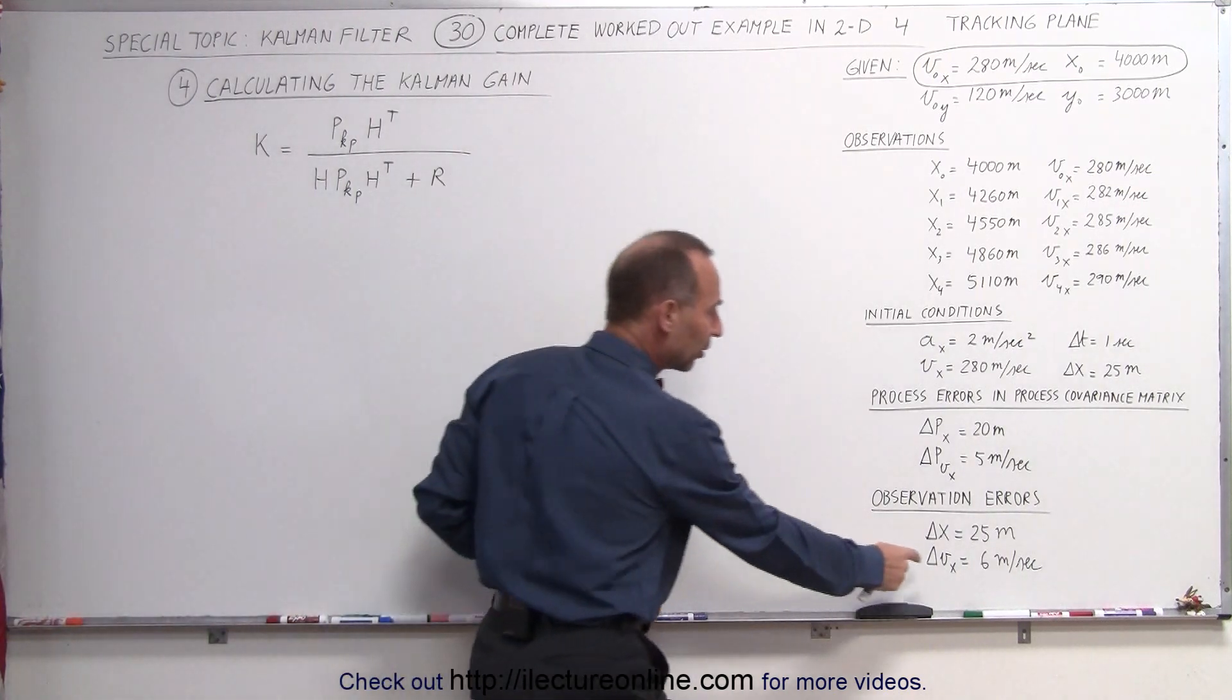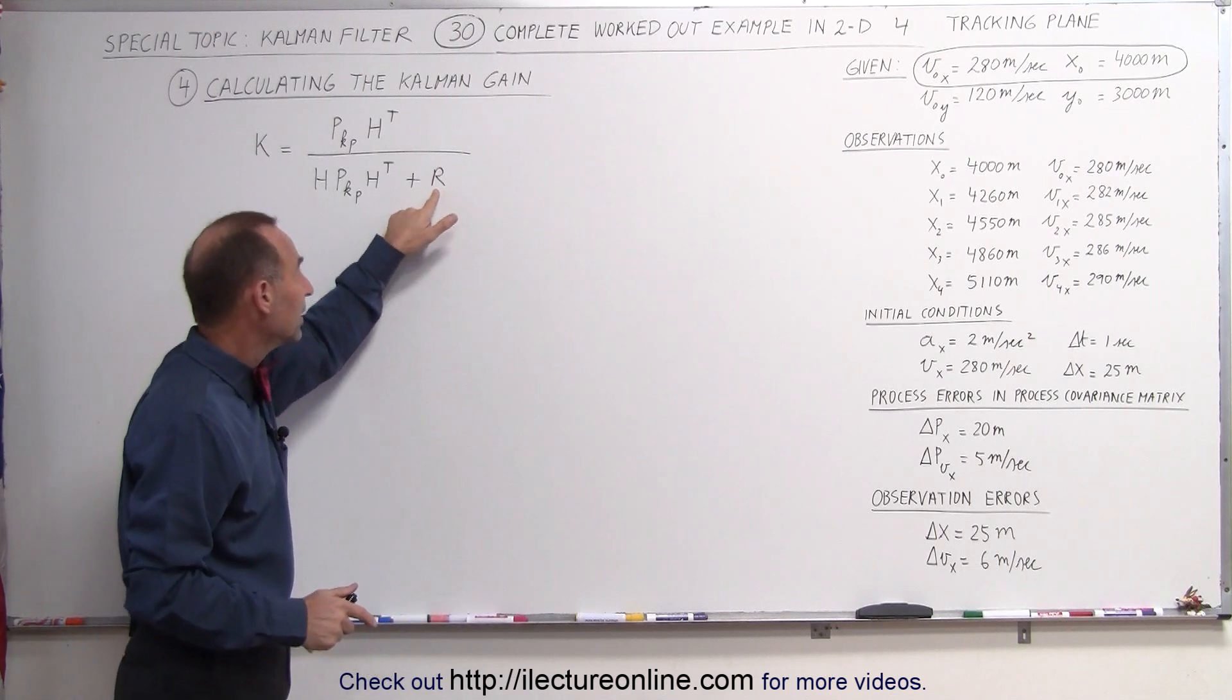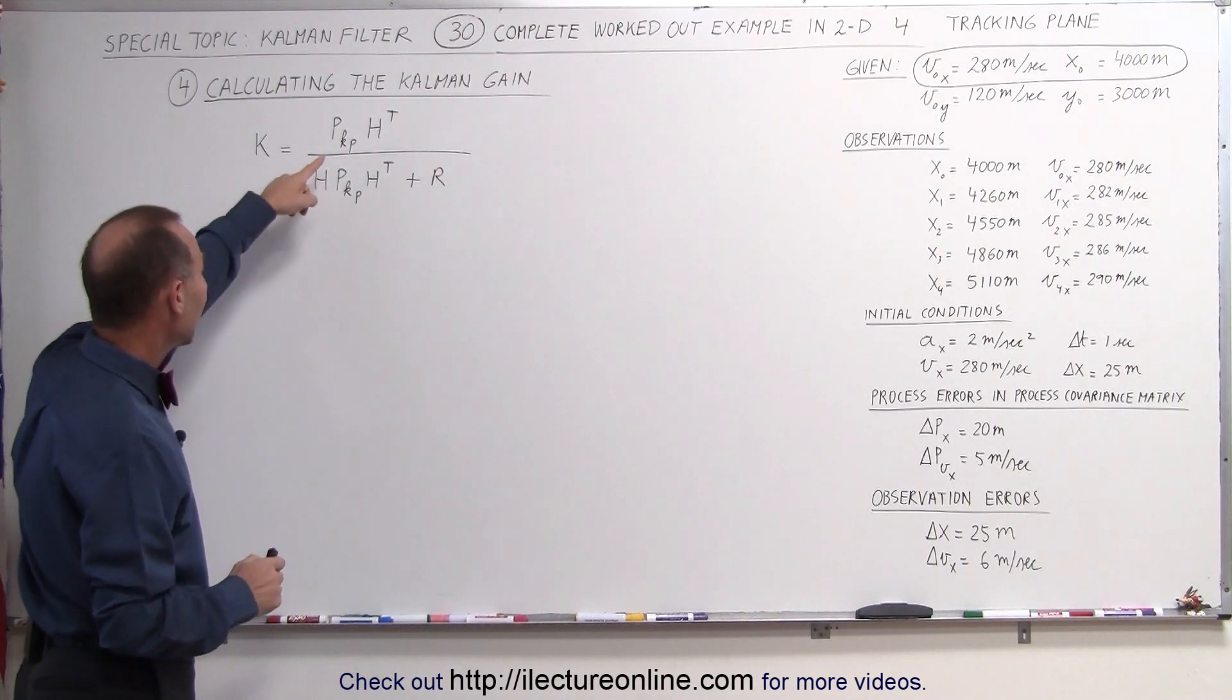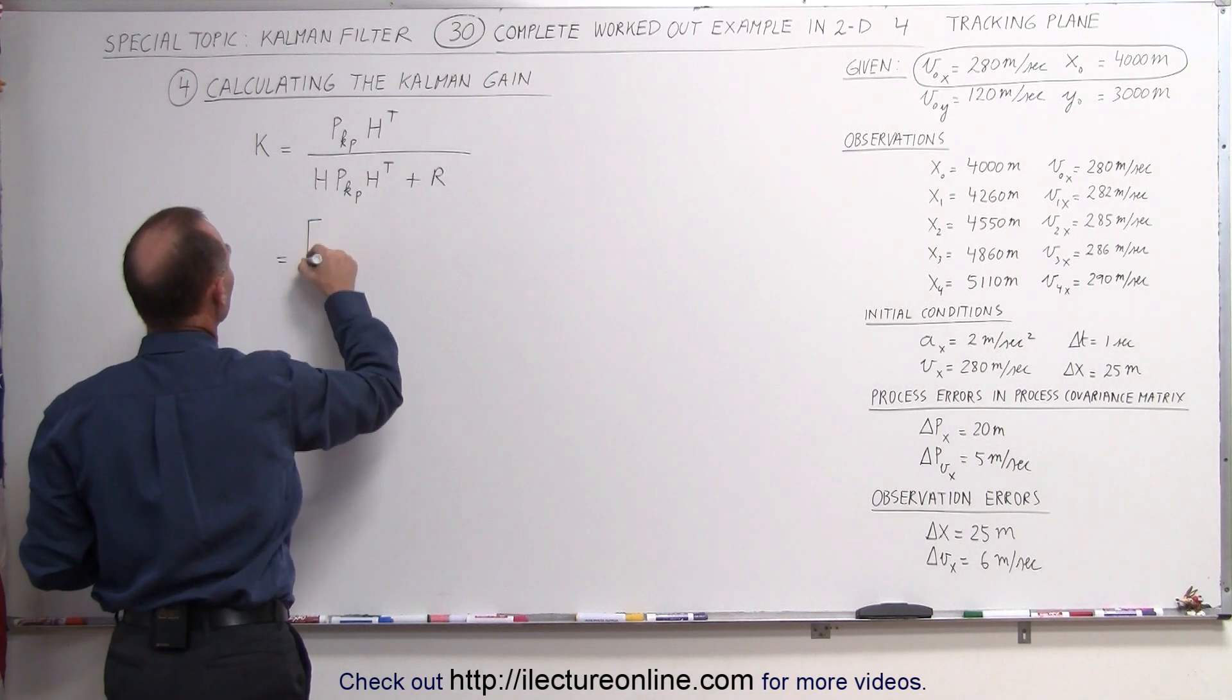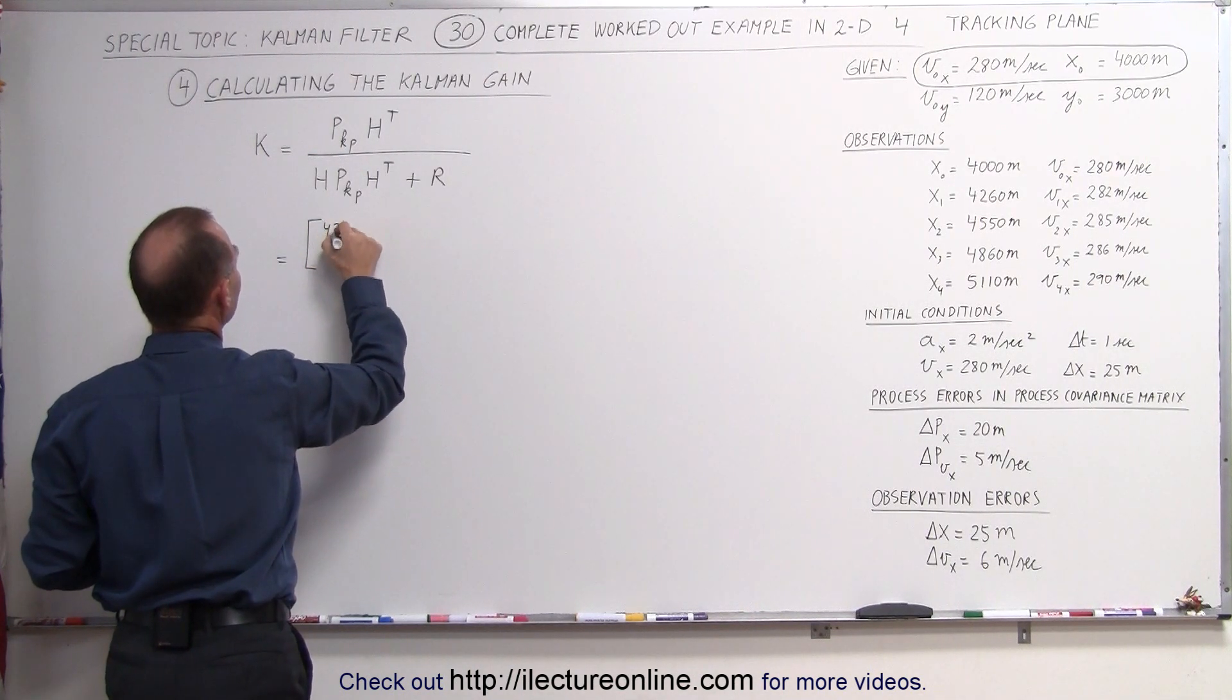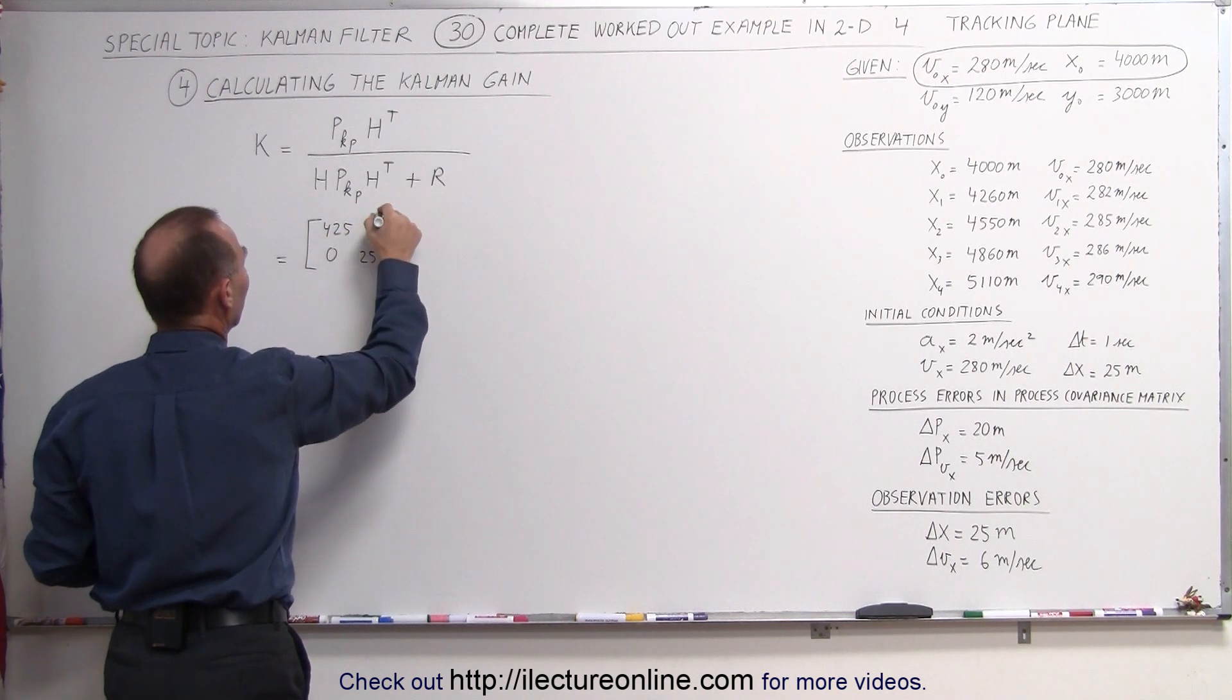Remember the observation errors are determined right here by those numbers, so we'll use those to make the matrix R. Let's go ahead and write this in and see what this is equal to. So this becomes equal to the matrix that we had here that was 425 and 25. Remember we got rid of the cross terms.